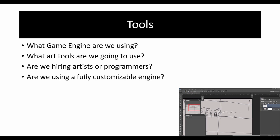Another key feature is to look at what tools you're going to be using. For instance, we're going to be using Unity, and I'll also show you how to use Construct in this course. You also need to consider what art tools you'll use — your classic pen and paper, Photoshop, or any modern tools you're comfortable with. You can also look at whether the engine will use extensions.